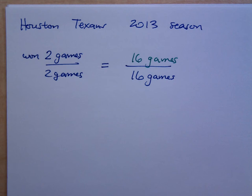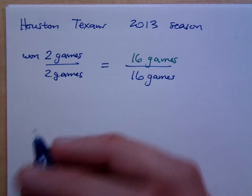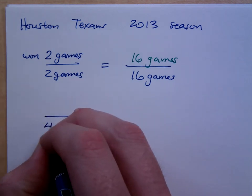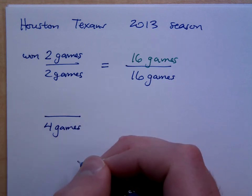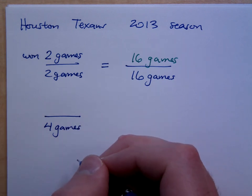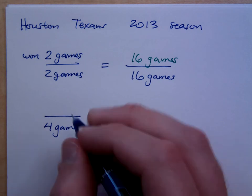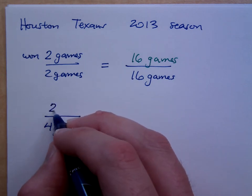Now, what had happened after there had been four games played in this season? Do you guys remember? How many games did the Texans win after the first four games? They'd won two games.